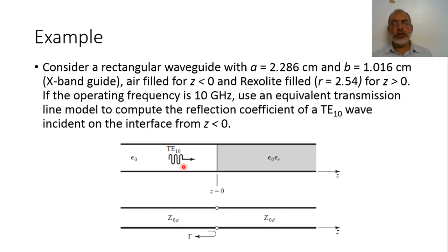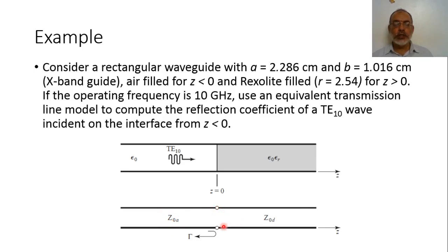We could determine this reflection coefficient using full wave analysis, but instead we are going to use an equivalent transmission line. This means we represent the air-filled waveguide by a transmission line section with characteristic impedance Z₀A, and the dielectric-loaded waveguide by another section with characteristic impedance Z₀B. So we have Z₀A loaded by impedance Z₀D, and the reflection coefficient is Z₀B minus Z₀A over Z₀B plus Z₀A, from transmission line theory.